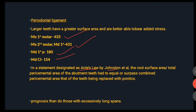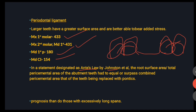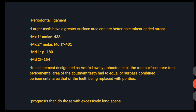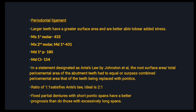This law was proposed by Johnston. It states that the root surface area or total periocemental area of the abutment teeth must be equal to or exceed the combined periocemental area of the teeth being replaced with pontics. A ratio of 1:1 satisfies this law, but ideally the ratio must be 2:1. FPDs with short pontic spans have better prognosis than those with long spans, and FPD is usually preferred over short edentulous spans.